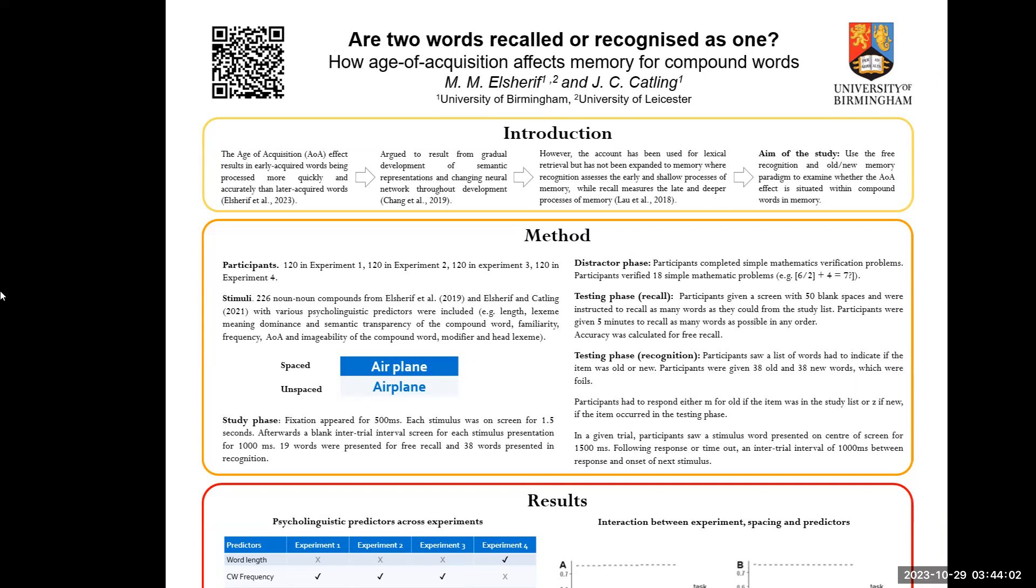So we have 480 participants that were split over 4 experiments, leading to 120 in each of them. They were given 226 noun-noun compounds. A series of recycling risk predictors were spaced and unspaced compounds. Experiments 1 and 3 were unspaced, experiments 2 and 4 were spaced compounds.